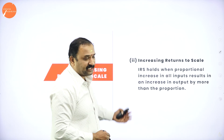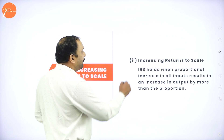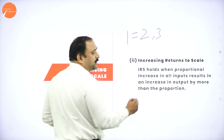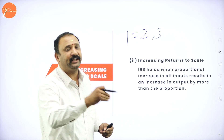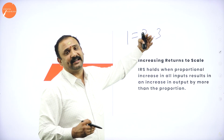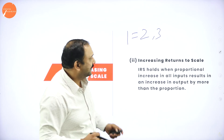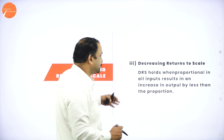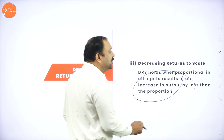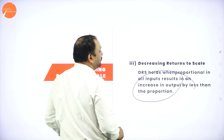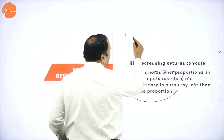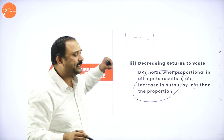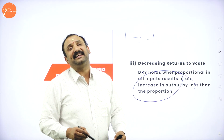The next type is increasing returns to scale — when a proportional increase in input results in a more-than-proportional increase in output. For example, by giving one input, the output increases by two or three, meaning output has grown at a higher level. Finally, decreasing returns to scale occurs when an increase in all inputs results in an increase in output, but by less than the proportion — meaning I increase input by one, but the output increases less. Increase in input with a less-than-proportional increase in output is called decreasing returns to scale.